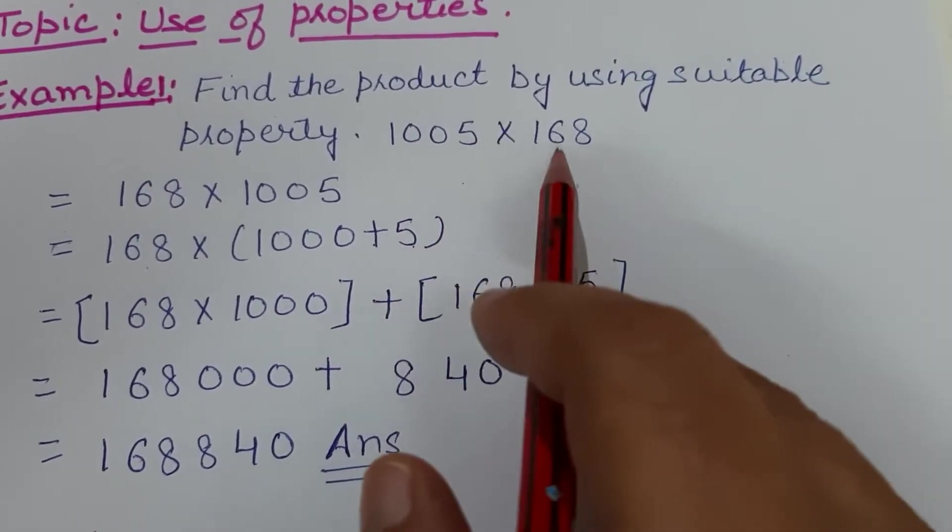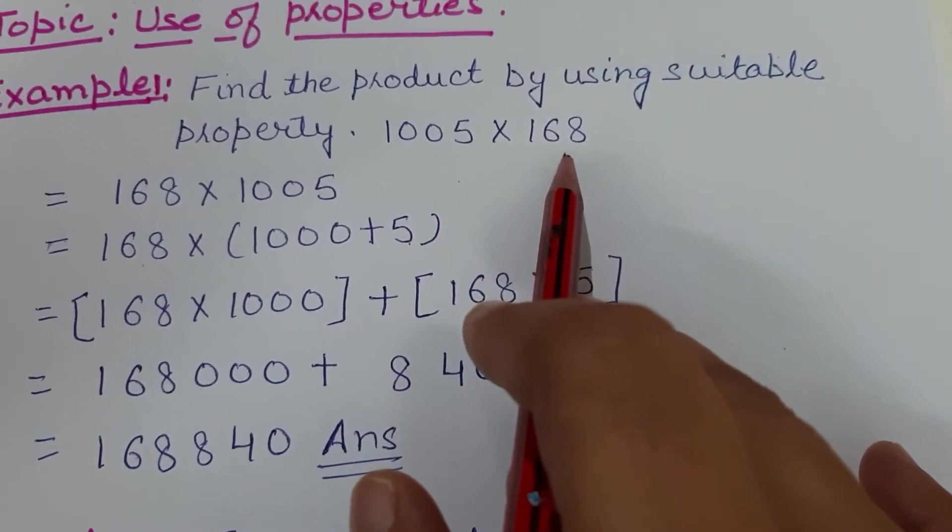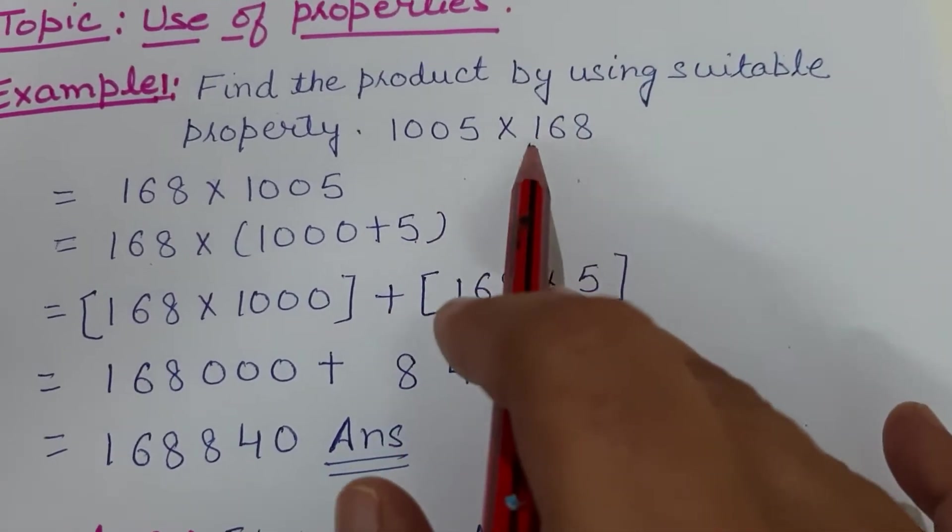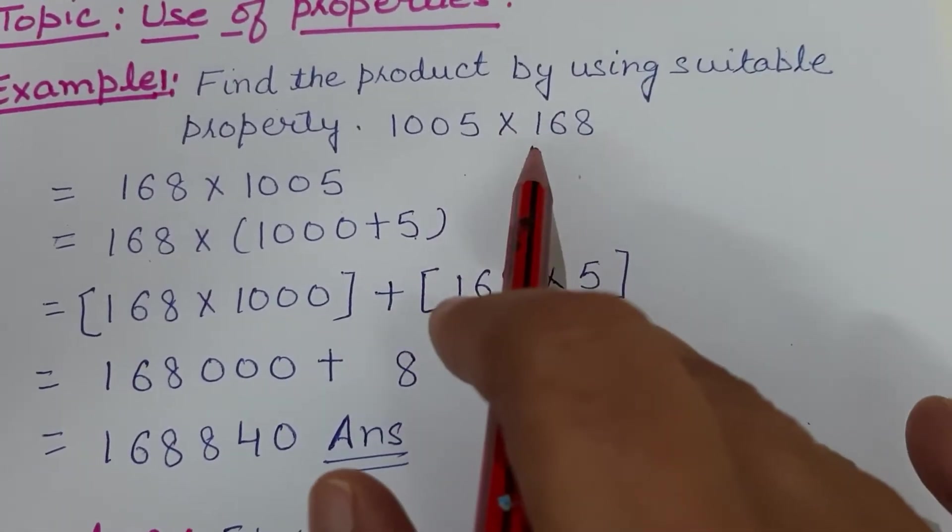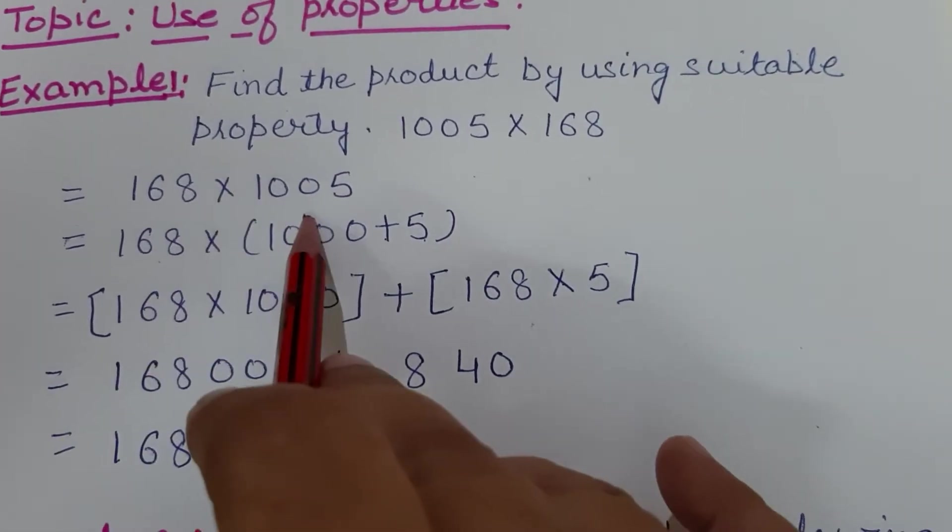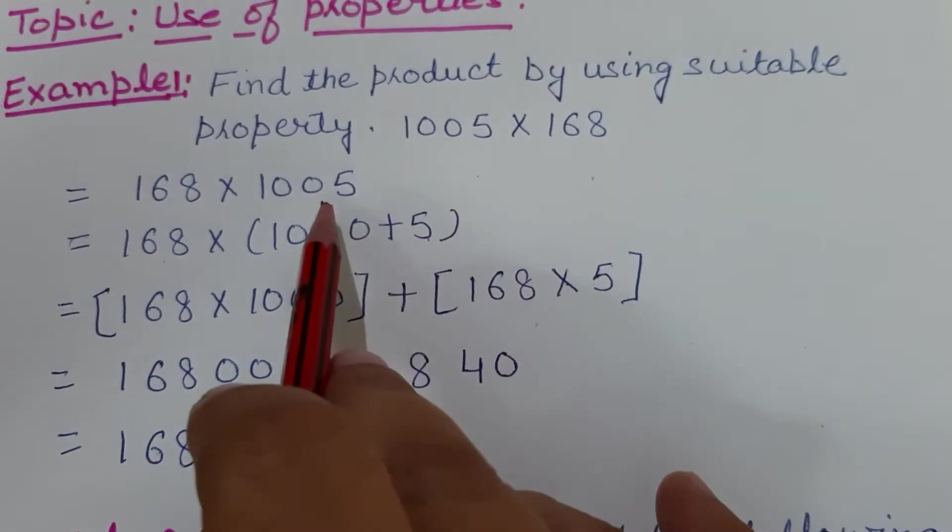If this number is written on the first side, you first change their places. You have done this in commutative property—by changing their places in addition and multiplication, there is no difference. The number which we are breaking should be written on the second place.